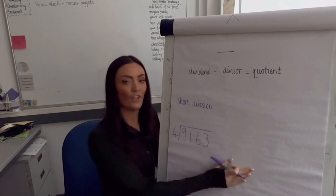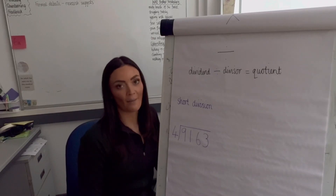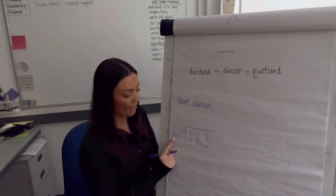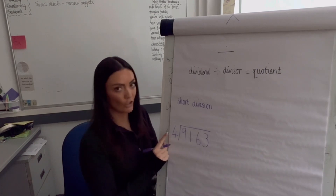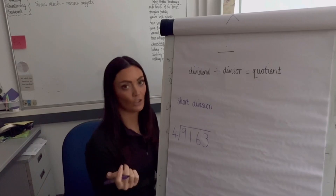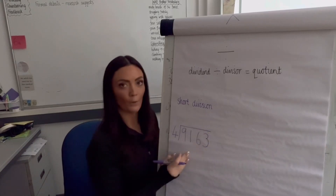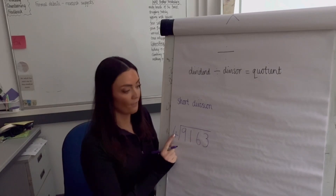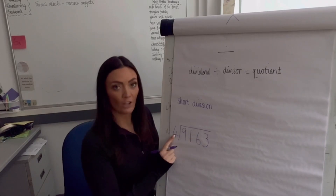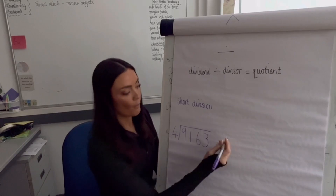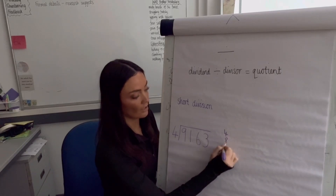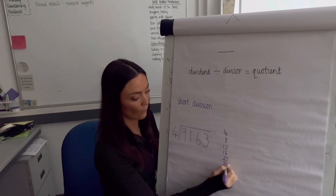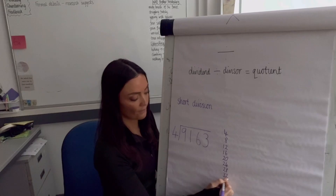We'll look at both short division and long division. You don't need to worry — for either a single-digit or two-digit divisor you can choose whichever method you prefer. We'll show both options. Our example is 9163 divided by 4. If you find times tables difficult, you can write out the times table first; if confident, that's fine.